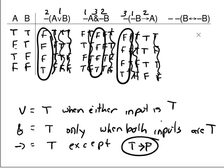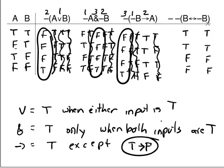Last formula: dash-(dash-B double-arrow dash-B). Notice there are no A's, only B's. Underneath both B's, repeat the guide column: true, true, false, false. The main connective is the outermost dash, and inside the parentheses the double arrow is the main connective. So we work on the inner dash first, then the double arrow, then the two outer dashes. The inner dash gives: false, false, true, true.